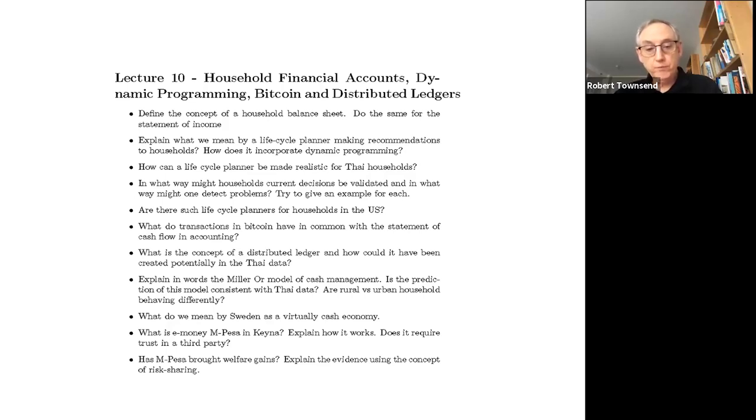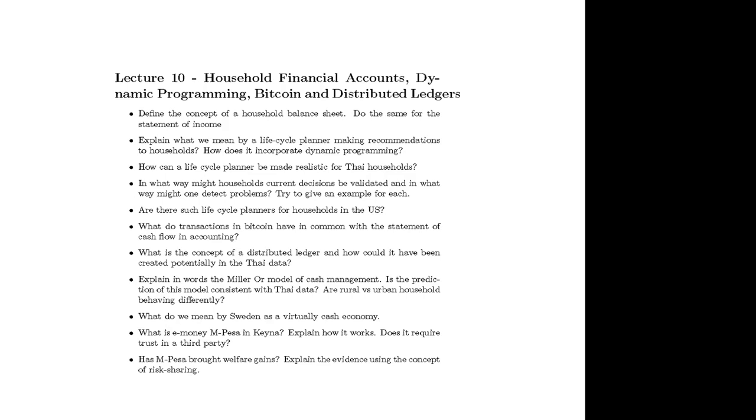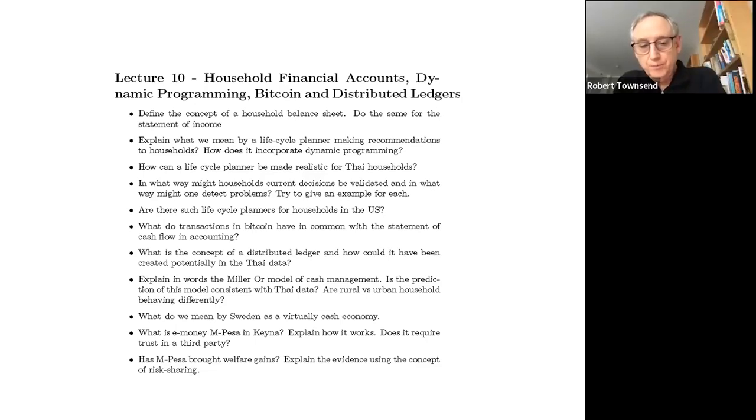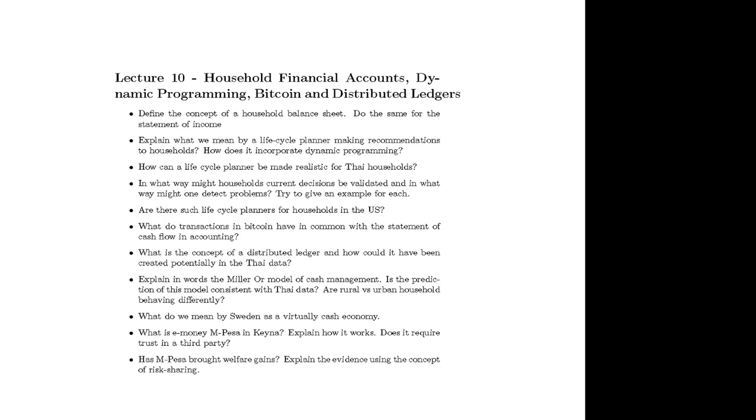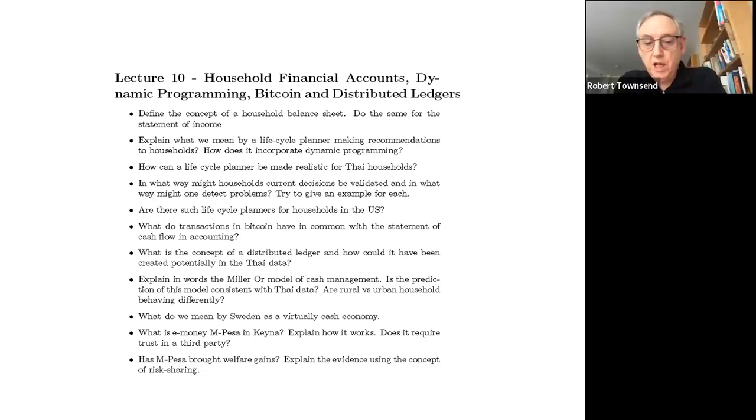The twist in that is the word distributed. So although it's common, it's not supposed to be held by one central party. Everyone's supposed to have an identical copy of that ledger. And in class, I complained a little bit about when we tried to create one for the Thai data, it didn't quite work. Does someone remember why? Dexton, you want to take a stab at it? I'm actually not really sure why it didn't work. Okay. That's fine. Anyone else?